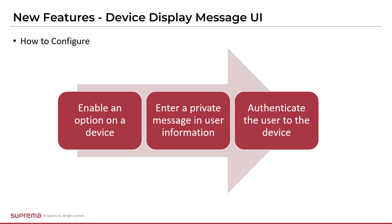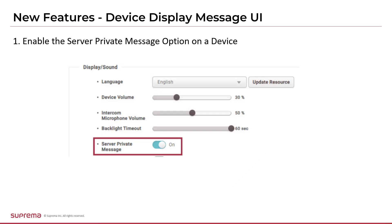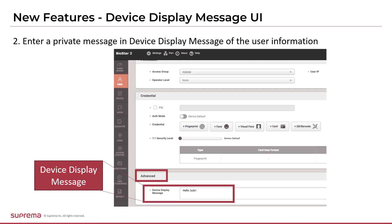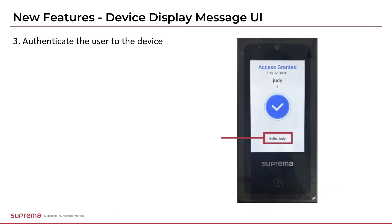Let's introduce the feature in three steps. First, you need to enable the option to use this feature on your device. Then, in the User menu, enter a message for that user. After that, when that user authenticates, you can see the message you set. After adding the device to Biostar 2, select the device. In the device settings information, check the Server Private Message menu and activate it. Then, click the User menu and check the device display message item on the user details page, and enter the message to be displayed when user authentication is successful. If authentication is successful, you can see the text message you entered displayed at the bottom of the device pop-up.